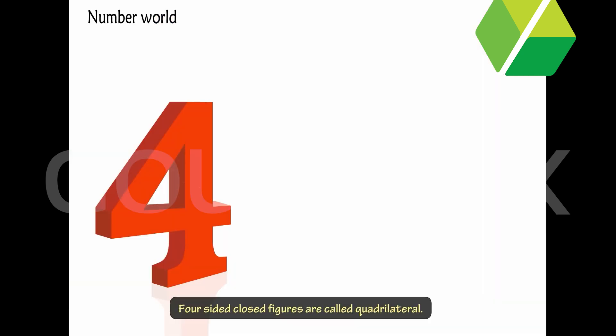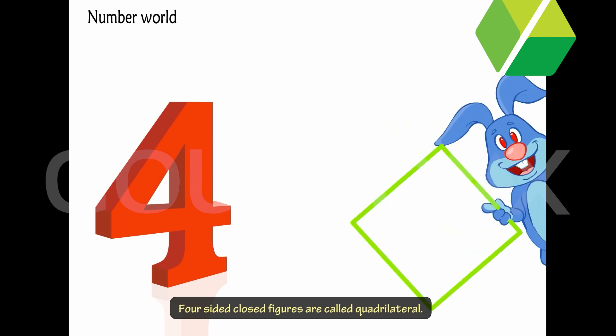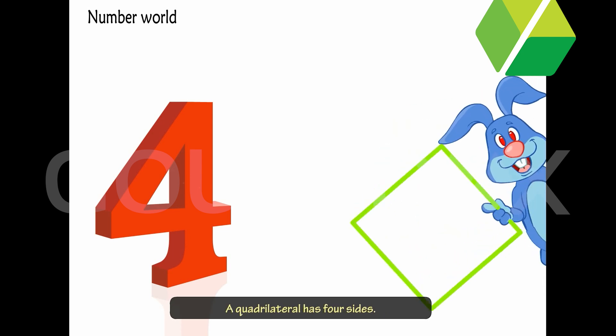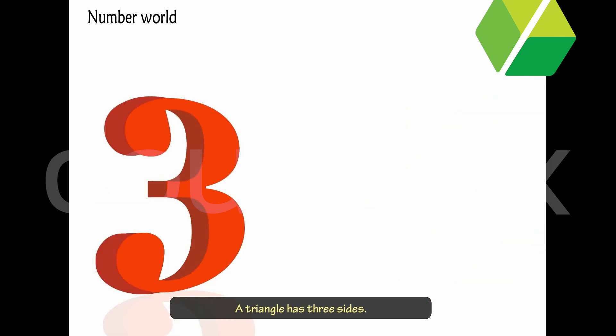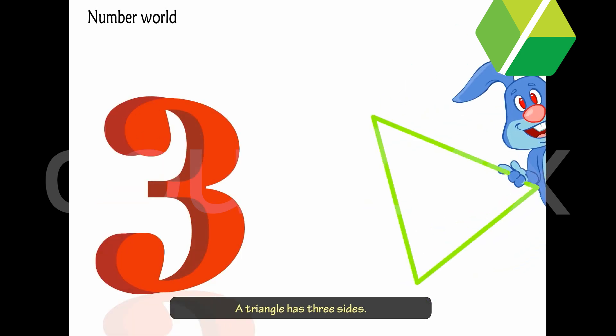Number world. Four-sided closed figures are called quadrilaterals. A quadrilateral has four sides. A triangle has three sides and a triangle has three vertices.